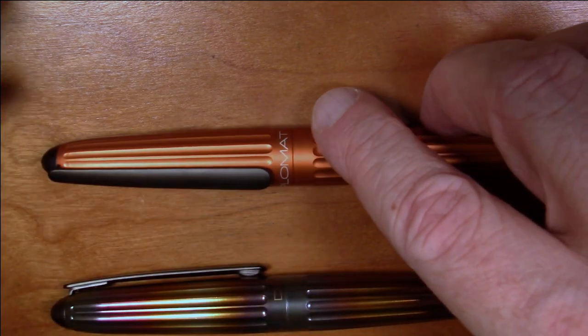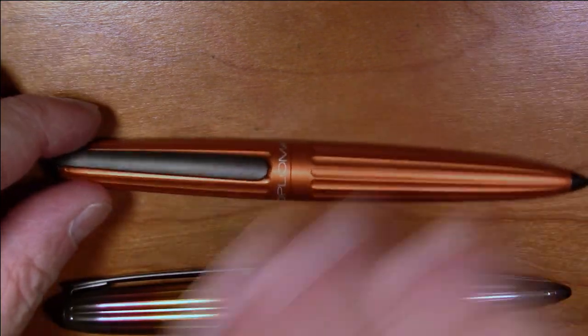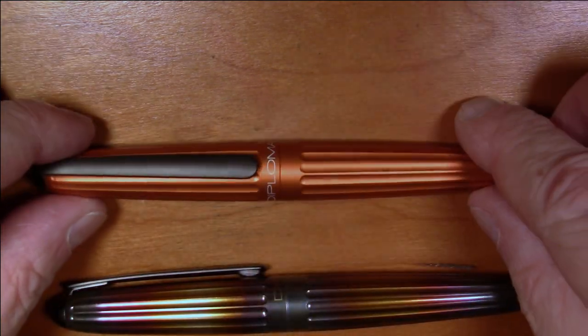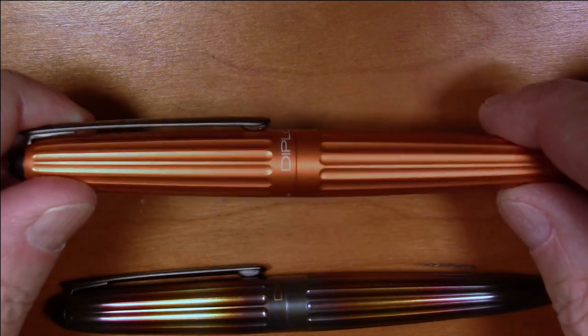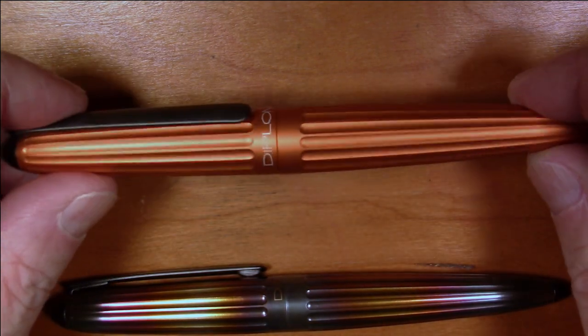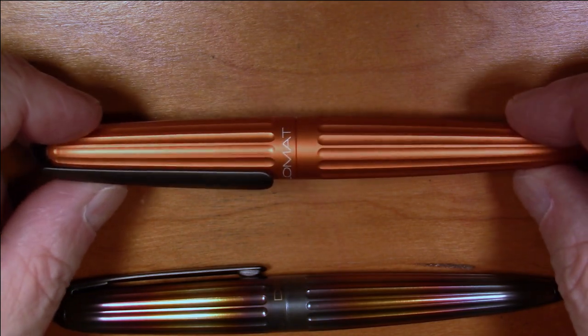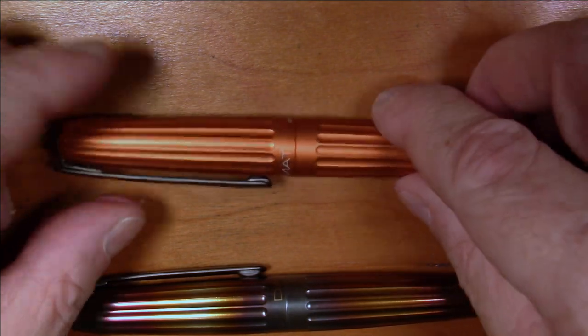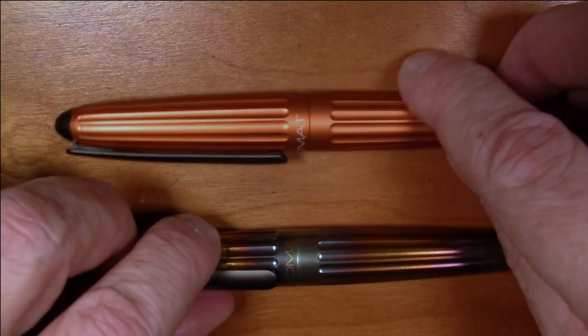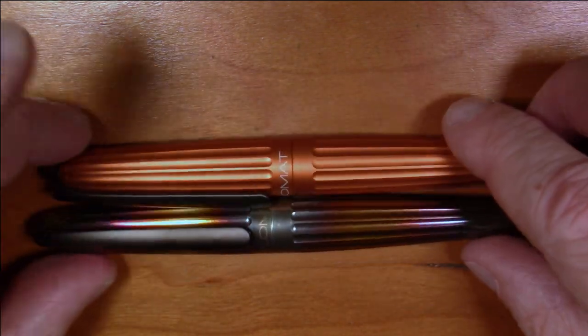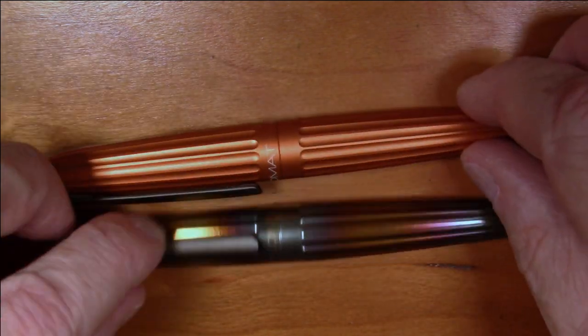This is a typical Diplomat Aero that's been on the market for quite some time. They have different color finishes that come and go. They are typically made of anodized aluminum. This particular one is obviously an orange colored pen. This one is the same form factor pen, exactly same size and shape, but it is made out of steel.